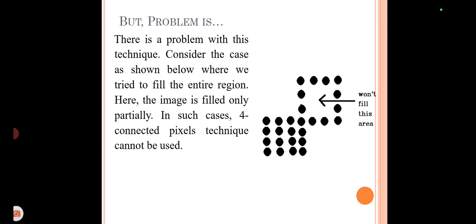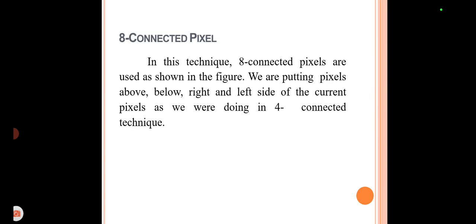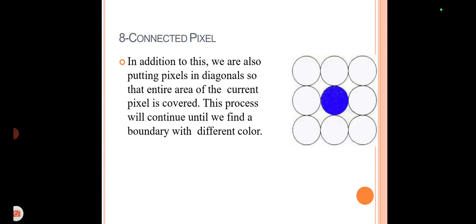The problem with four-connected pixels is that it fills some parts but leaves other parts empty — it may not color pixels that are expected to be filled. To avoid this, we use the eight-connected method. In eight-connected pixels, we use all four connected pixels along with the diagonal elements, so that the entire area around the current pixel is covered.